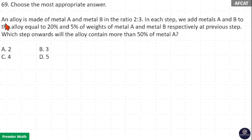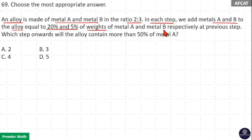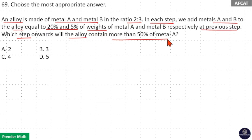Choose the most appropriate answer. An alloy is made of metal A and B in the ratio 2:3. In each step we add metals A and B to the alloy equal to 20% and 5% of the weights of metal A and B respectively at the previous step. Which step onwards will the alloy contain more than 50% of metal A?